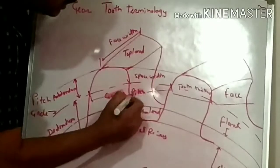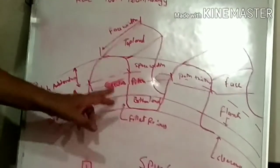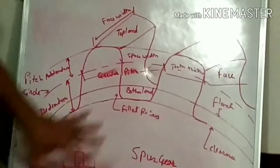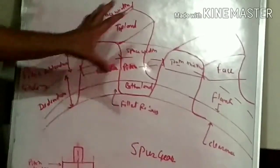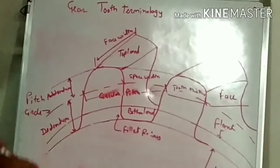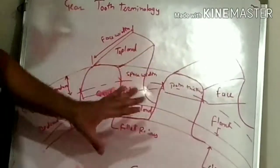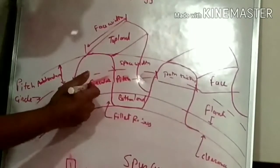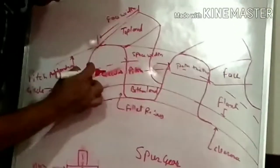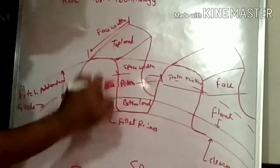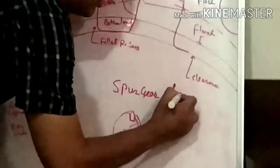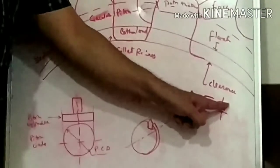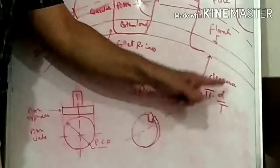The next term is circular pitch. It is the distance measured along the pitch circle from one point on a tooth to the corresponding point on the adjacent tooth. The figure shows some portion of the gear with the different terms related to gear. Mathematically, circular pitch equals π × d / t, where d is the pitch circle diameter of the gear and t is the number of teeth on the gear.